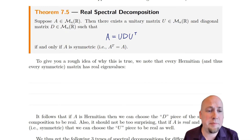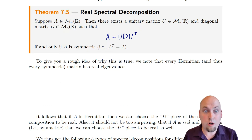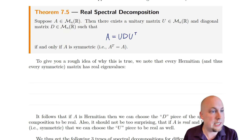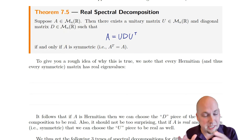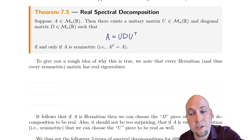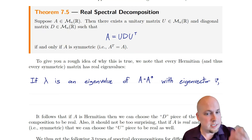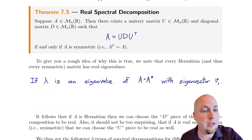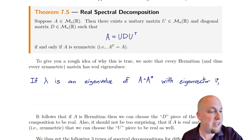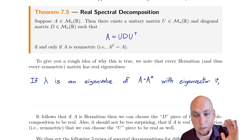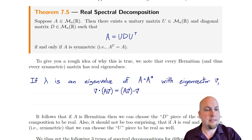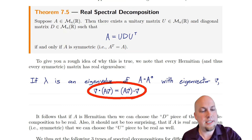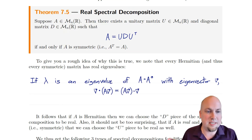To convince ourselves that something like this should be true, we're going to show that the eigenvalues of every Hermitian matrix are all real. In particular, that means if your matrix is real symmetric, all of its eigenvalues are real as well, because real symmetric matrices are Hermitian. Suppose lambda is any eigenvalue of a Hermitian matrix and let V be a corresponding eigenvector. We're going to compute the dot product V dotted with AV — it's going to work to give us our answer.